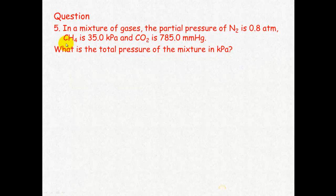So here's a question for you to have a go at. In a mixture of gases the partial pressure of nitrogen is 0.8 atmospheres, methane is 35 kilopascals and carbon dioxide is 785 millimeters mercury. What is the total pressure of the mixture in kilopascals?